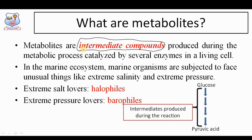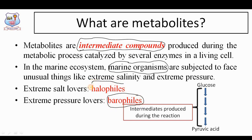In the marine ecosystem, organisms are subjected to stress. The marine ecosystem is a very beautiful ecosystem for research because the organisms are very different — they are subjected to stress like high salt and high pressure. Salt-loving organisms are called halophiles, whereas pressure-loving organisms are called barophiles. Marine organisms are extremely halophilic and extremely barophilic in nature because they are exposed to high salt concentration as well as high pressure.